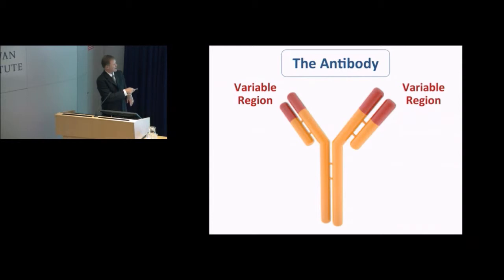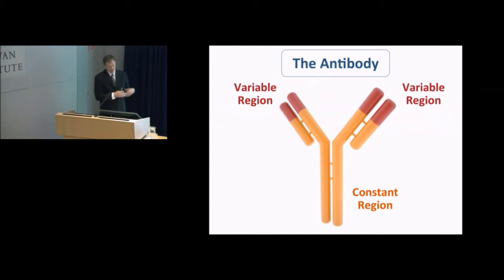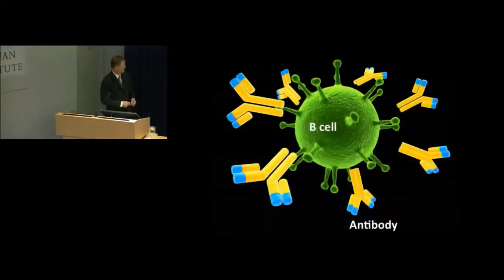That's all about how the antibodies stick to something. The other component, which I'll talk about towards the end of the talk, is what we call the constant region. Clearly it's the same between antibodies — but not all the time. There are basically different classes of antibodies which share constant regions, and so share different functions. We'll get into that in a bit more detail.